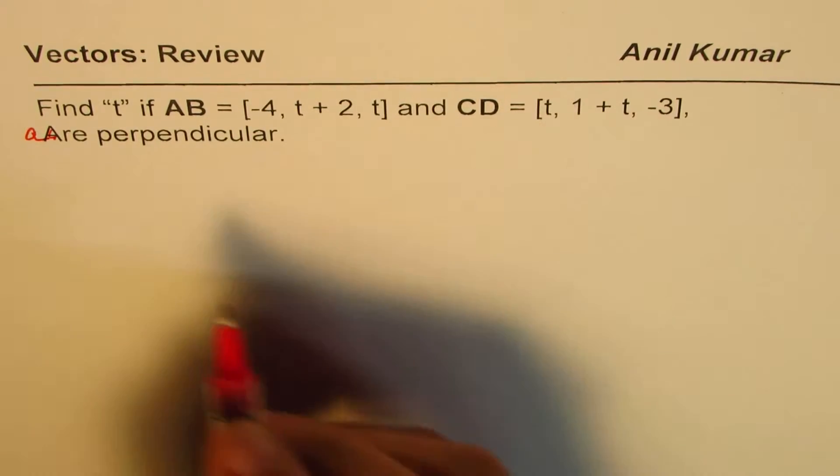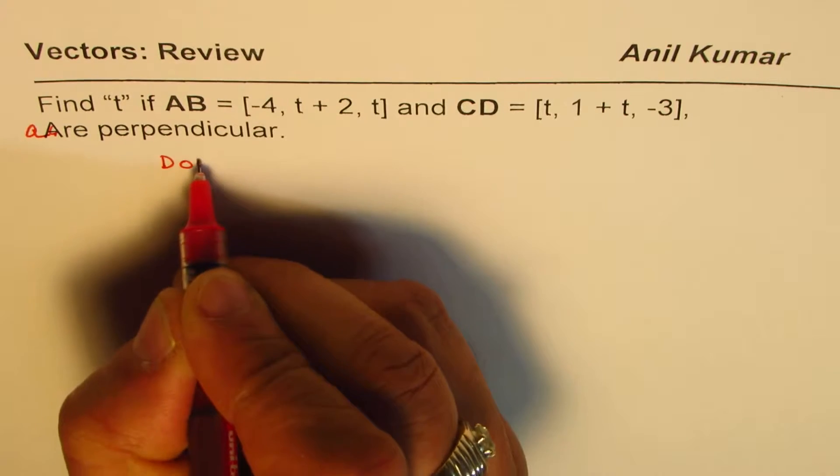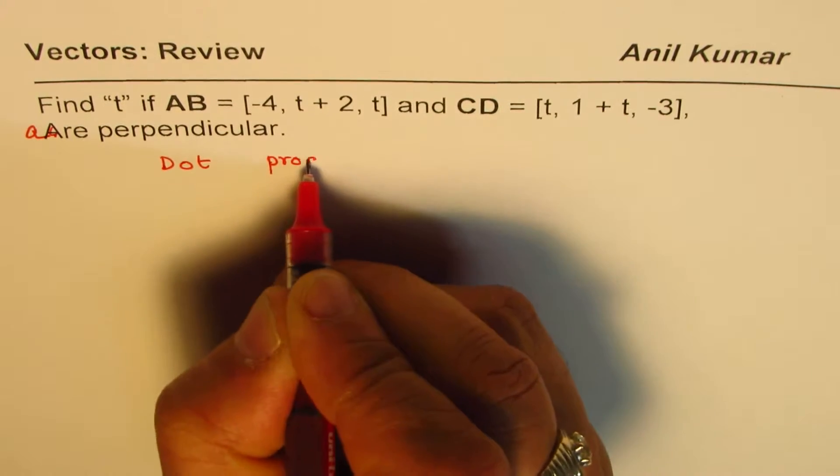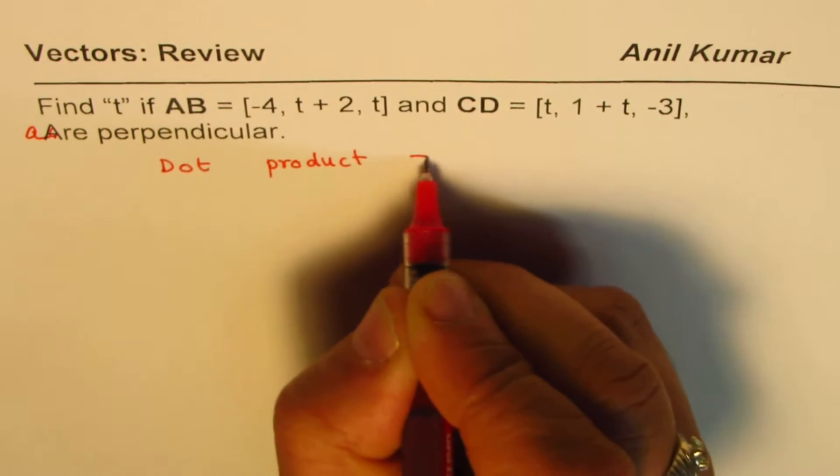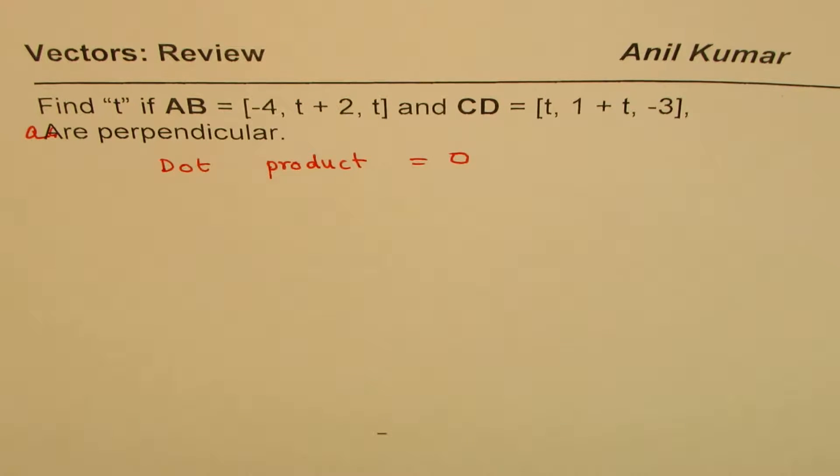Now, what concept are we using here? We are saying dot product is 0. So, dot product equals to 0. That is the concept which we are using.